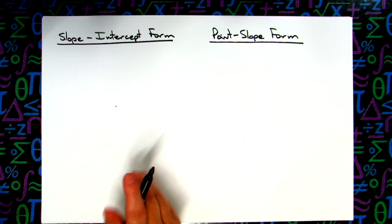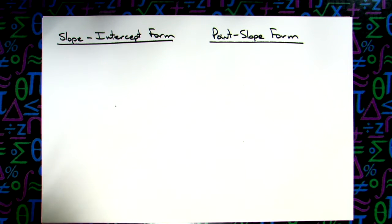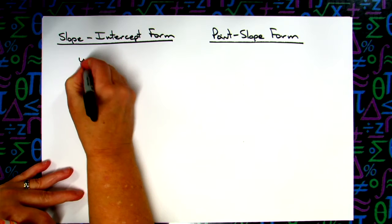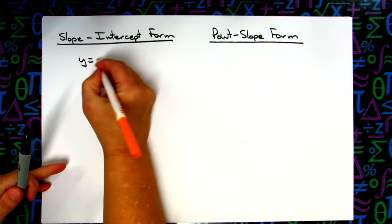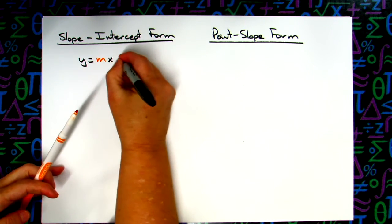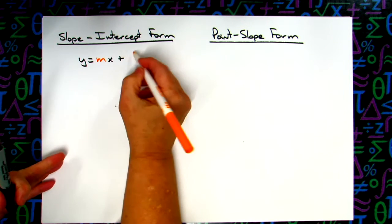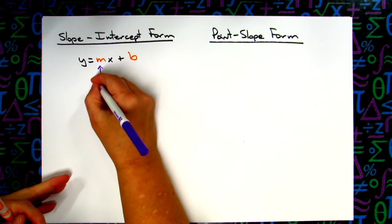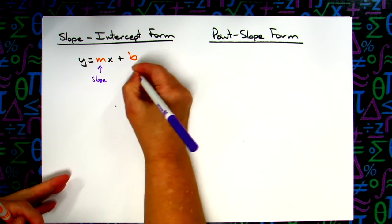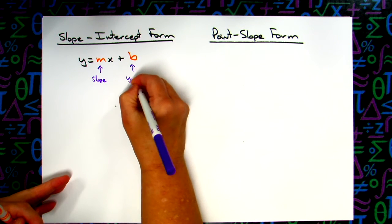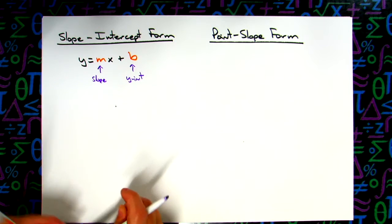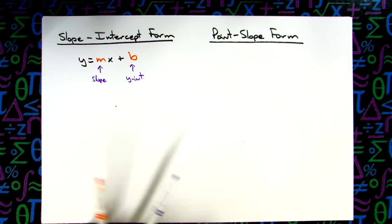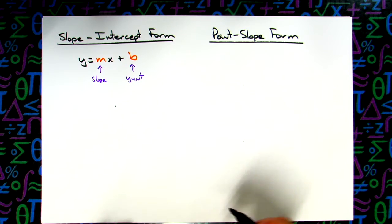Slope intercept form: y equals mx plus b. Putting m and b in a different color to show where your numbers go. M is your slope, and b is the y-intercept. That's the one used most commonly — a lot in Algebra 1 and a lot in Algebra 2 — so you should be pretty familiar with that one.